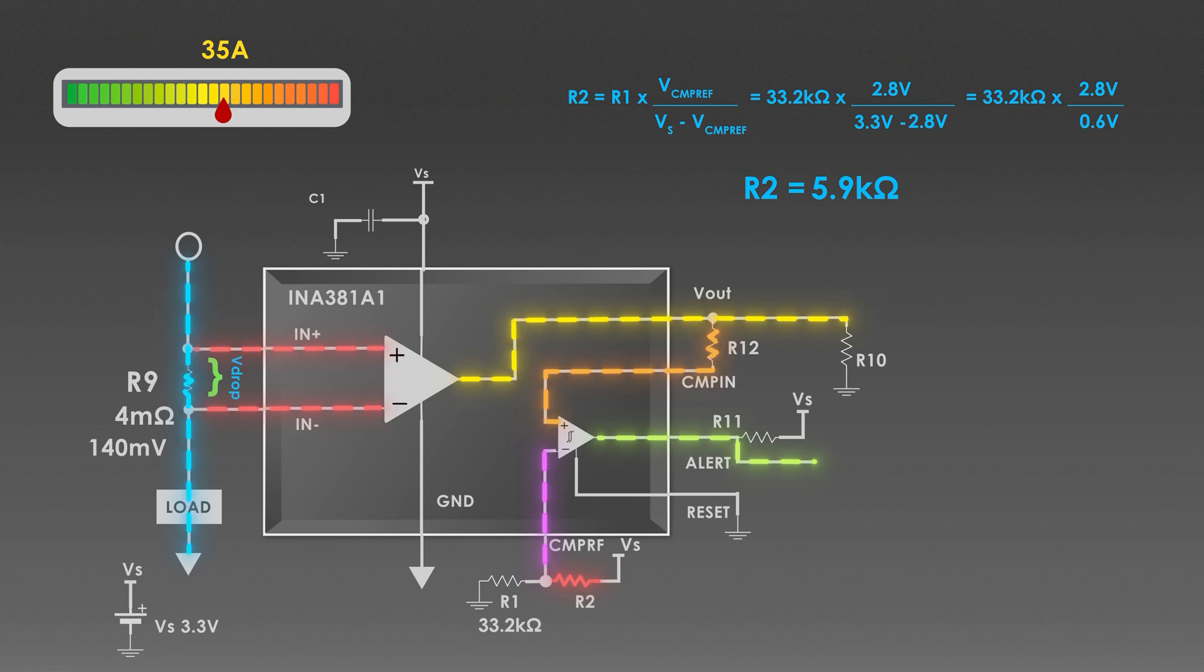When the current reaches 35 Amperes, the comparator gets amplifiers output voltage as 2.8 volts. And the reference is also same. So, the comparator triggers and provides the alert of our voltage as soon as it reaches this value.